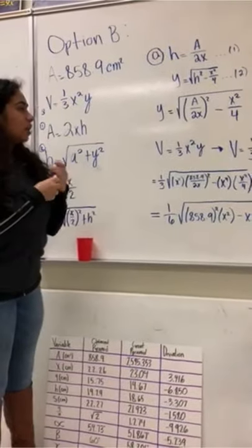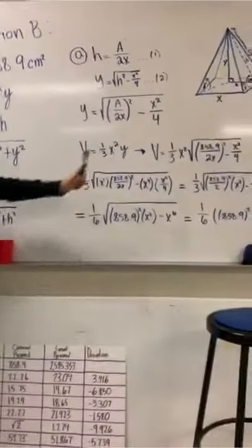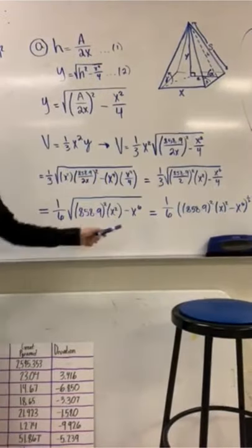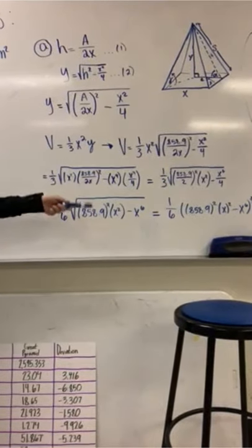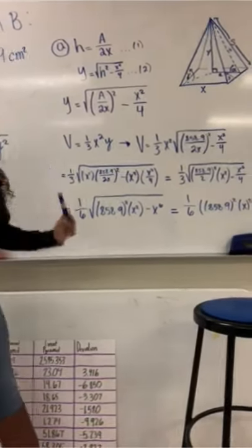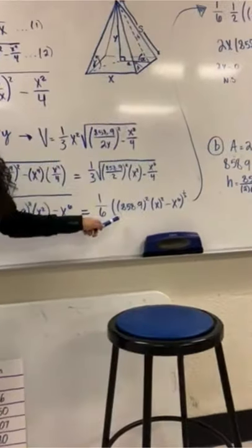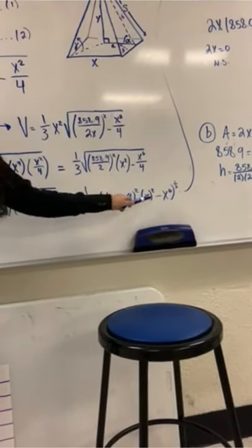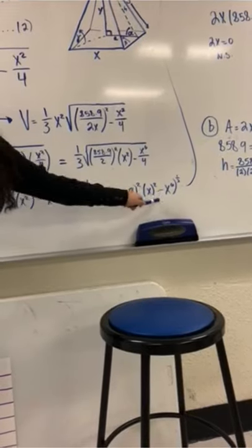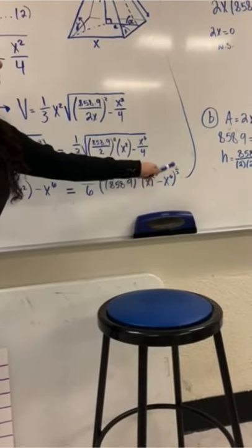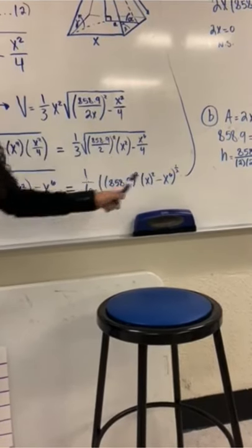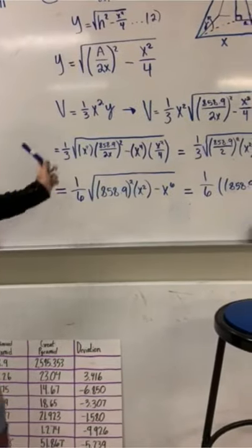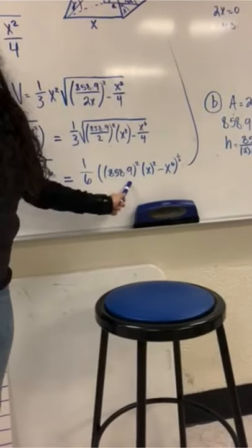Using this volume formula, we plugged in different values and found the simplified version: volume = one-sixth times 858.9 squared times x squared minus x to the power of 6, raised to the power of one-half.